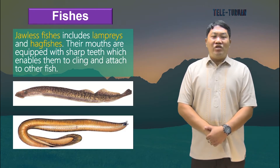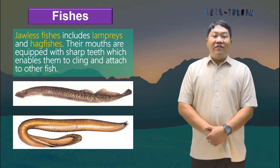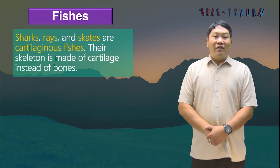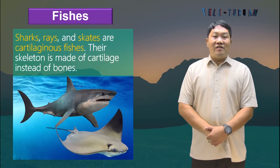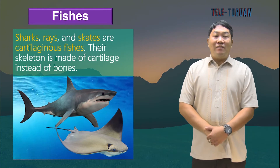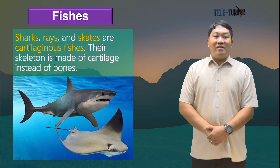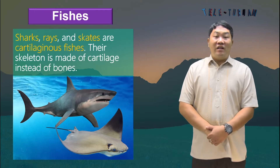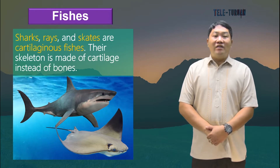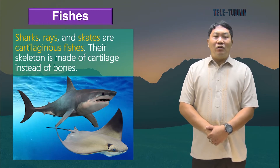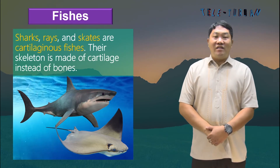Jawless fishes' mouths are equipped with sharp teeth, which enables them to cling and attach to other fish. They feed on other fish, sucking out their fluids and drawing out their internal organs. Sharks, rays, and skates are cartilaginous fishes. Their skeleton is made up of cartilage instead of bones. They are mostly found in warm, tropical seas. Sharks live in the open part of the sea and are considered the ultimate hunters, while rays and skates live at the bottom of the sea and are not as aggressive as sharks.